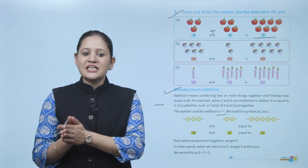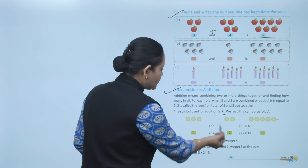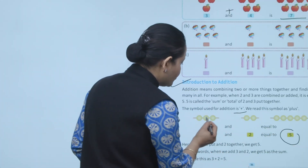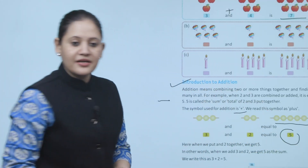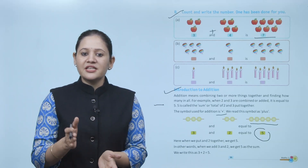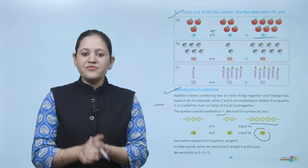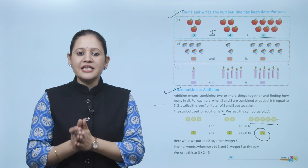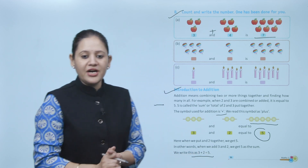We read the symbol as plus. So here three plus two: one, two, three, four, five — total five. When we put two and three together we get five. In other words, when we add three and two we get five as the sum. We write it as three plus two equals five.